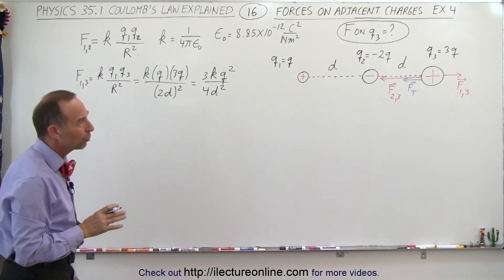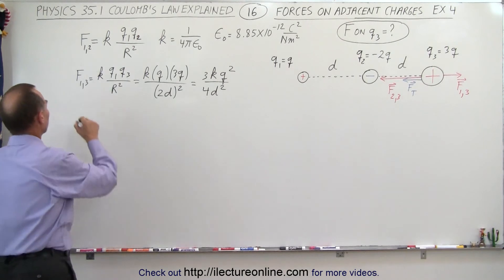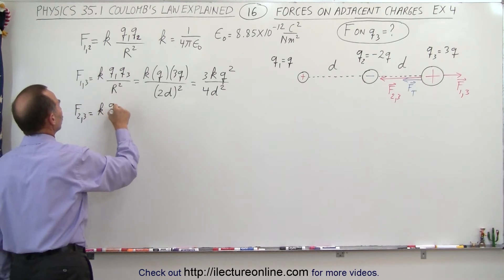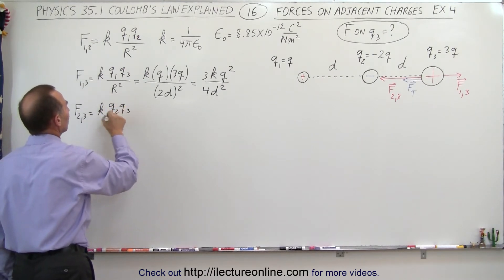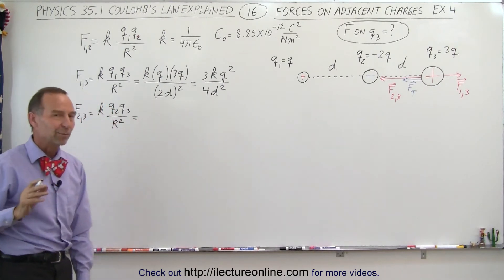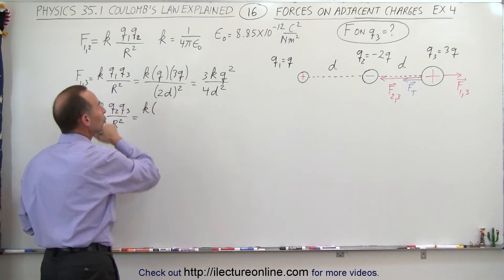Now the magnitude of the force between the second and the third charge. So here we have the force between 2 and 3, which is equal to K times Q2 times Q3 divided by the distance between them squared. Now here, you might be surprised.